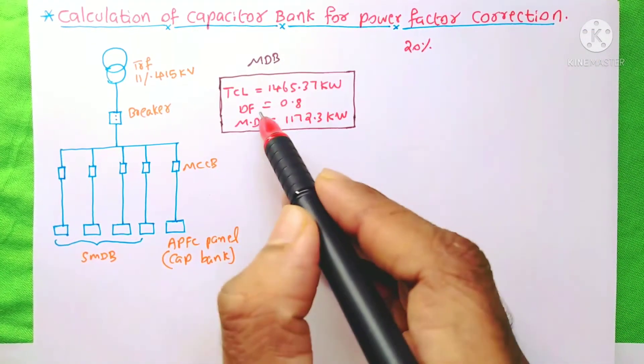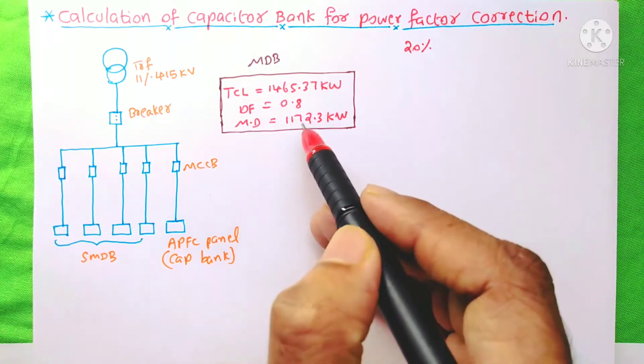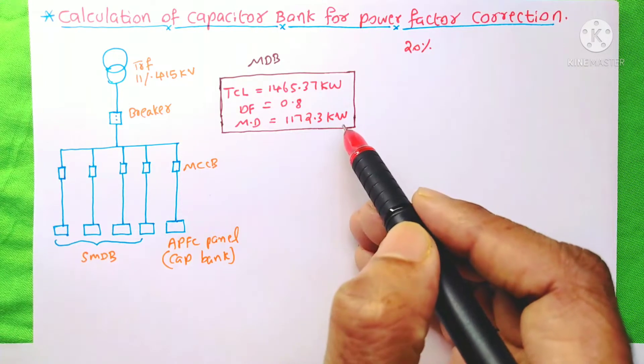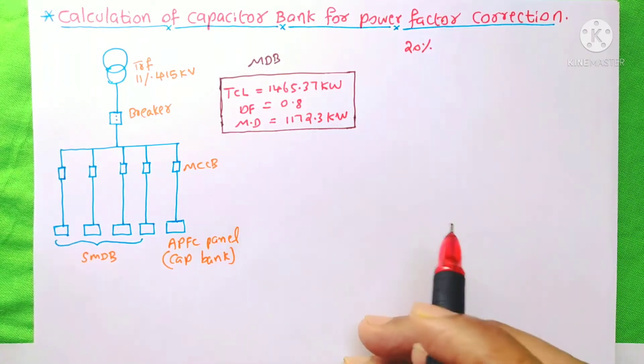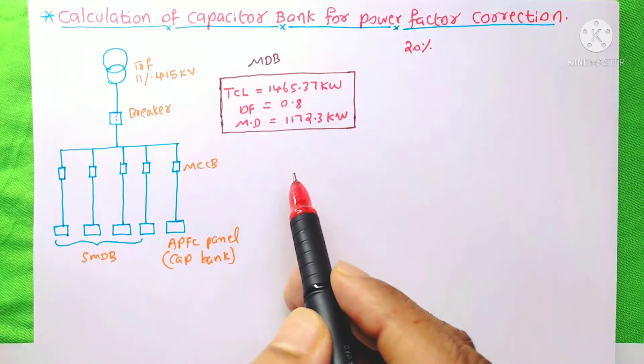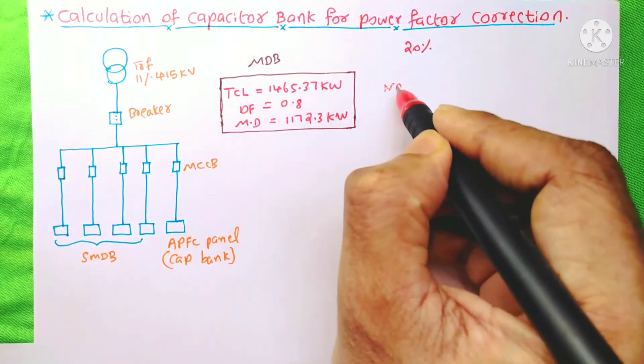We consider here demand factor 0.8 and we got a maximum demand of 1172.3 kW. One important thing is, we always need to calculate the capacitor bank for the maximum demand, not for the total connected load.